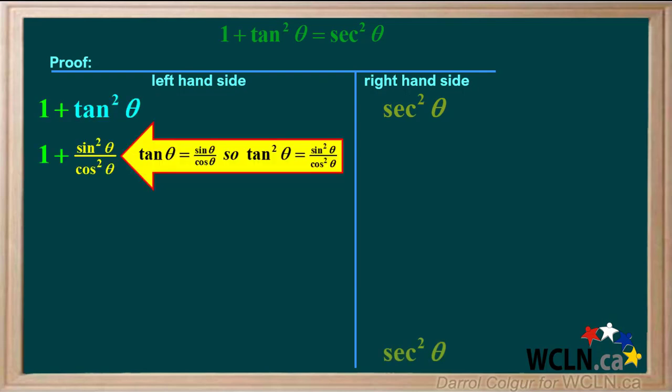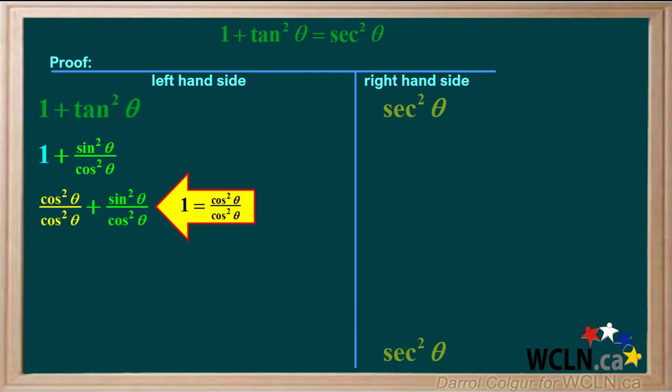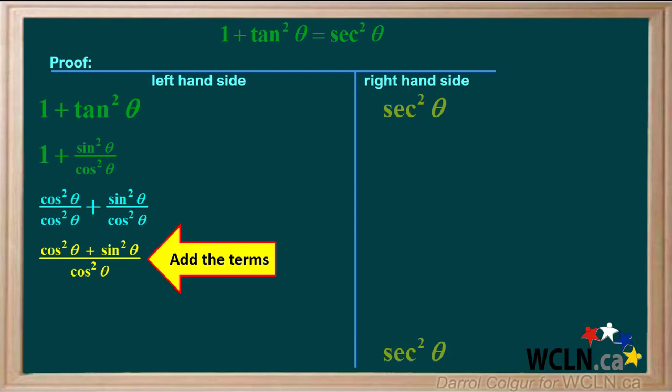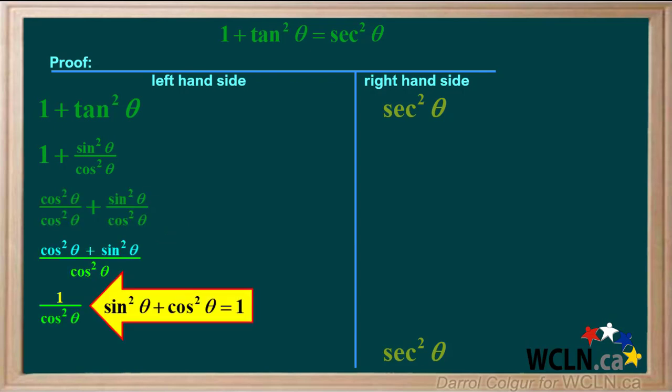Tan theta equals sin theta over cos theta, so squaring both sides gives us tan squared theta equals sin squared theta over cos squared theta. We'll replace 1 by cos squared theta over cos squared theta to get a common denominator for the two terms. Adding the two terms gives us cos squared theta plus sin squared theta, all over cos squared theta. We'll use the Pythagorean identity sin squared theta plus cos squared theta equals 1 to give us 1 over cos squared theta.